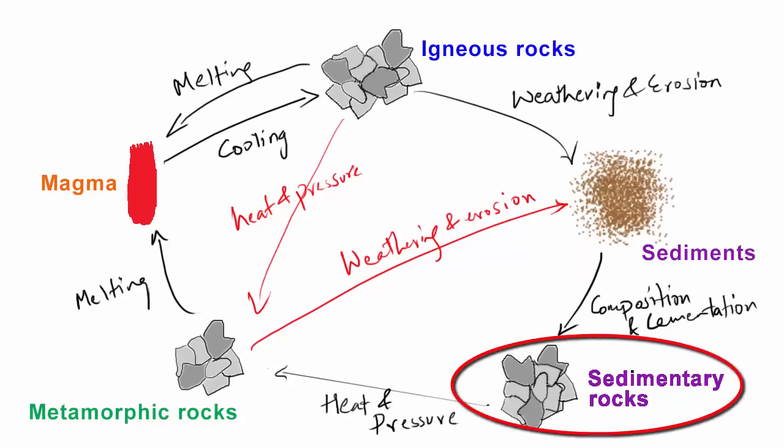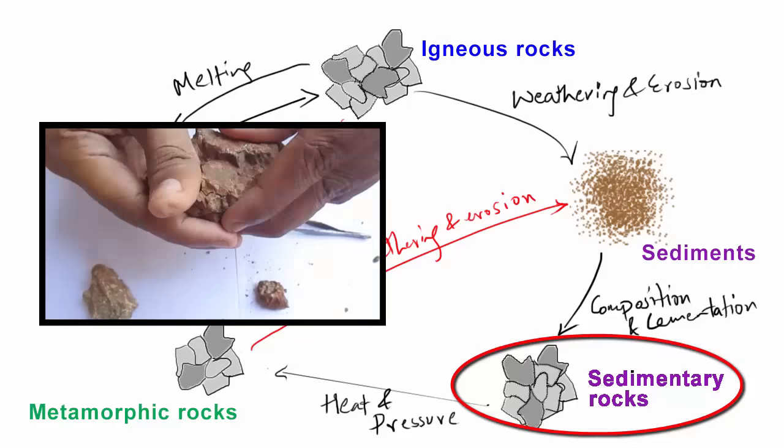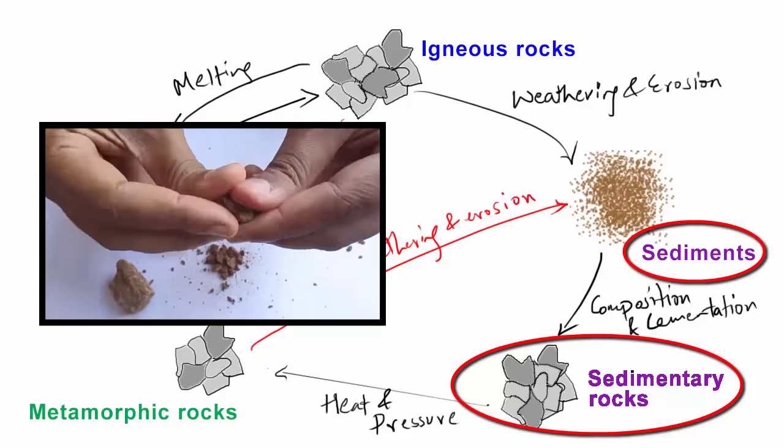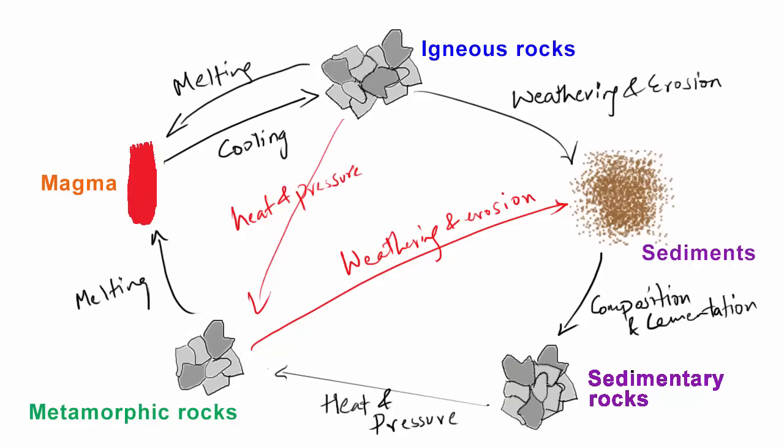So that was the formation of sedimentary rocks from igneous rocks. Now this sedimentary rock has the tendency to break apart again into smaller debris or sediments. Now comes the part where we need to find out how metamorphic rocks are formed.